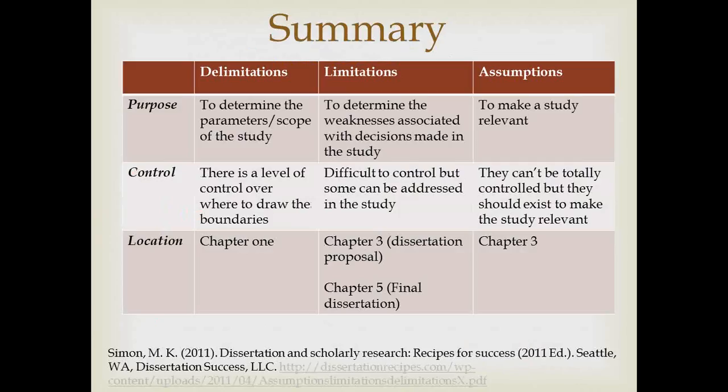I just did a summary table to help you understand the differences between them. For delimitation, the purpose is to draw the parameters of your study. There is a level of control because you define the parameters, and normally it is written in chapter one. For limitation, the purpose is to determine the weaknesses associated with decisions made in the study. It's very difficult to control, but you have to think about how to address those limitations. Normally it is written in chapter three for the dissertation proposal, and in chapter five when you finish your final product.